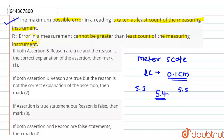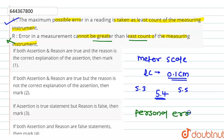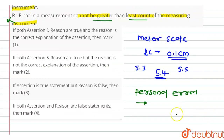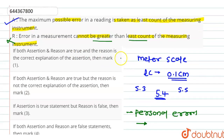The statement of reason is: error in the measurement cannot be greater than the least count. This statement is wrong, because let us consider an example of personal error. Personal errors are those errors which occur due to faulty measurement done by a human being or the person doing the experiment. These errors have no limit, so they can be greater than the least count of the measuring instrument.